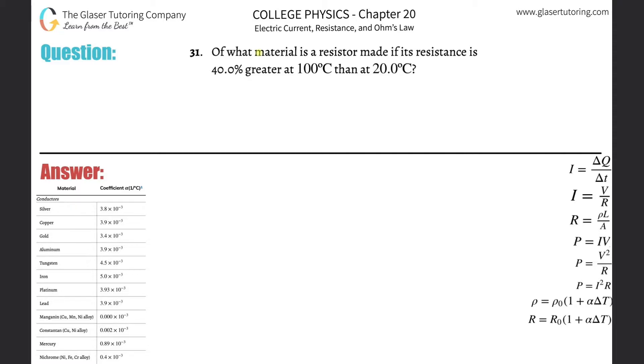Number 31: Of what material is a resistor made if its resistance is 40% greater at 100 degrees Celsius than at 20 degrees Celsius? First, take a look at problem 29 for an overview of this concept and number 30 for how to deal with percentages. I'm going to run through this one now.